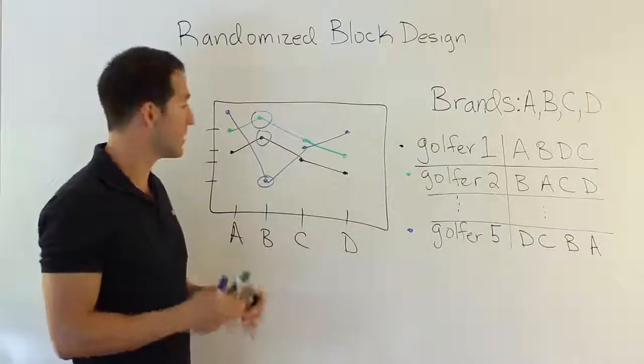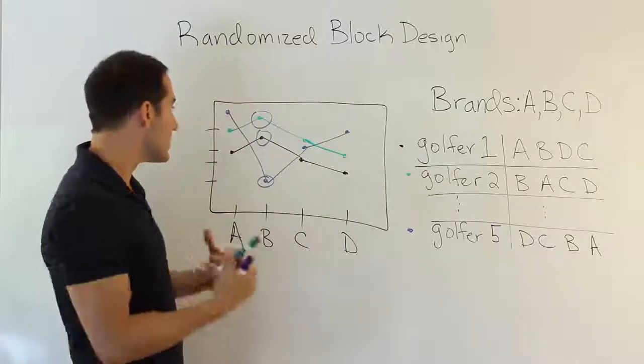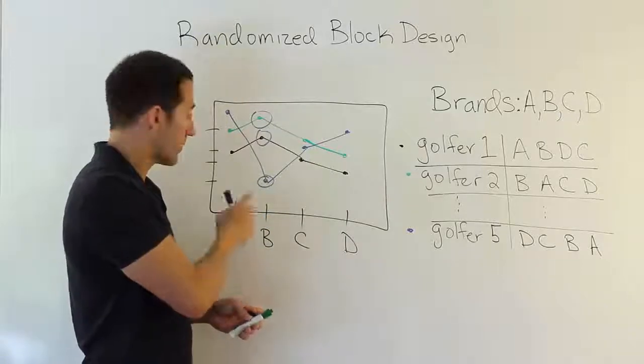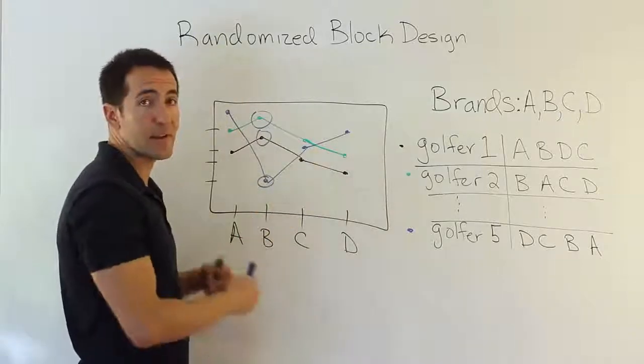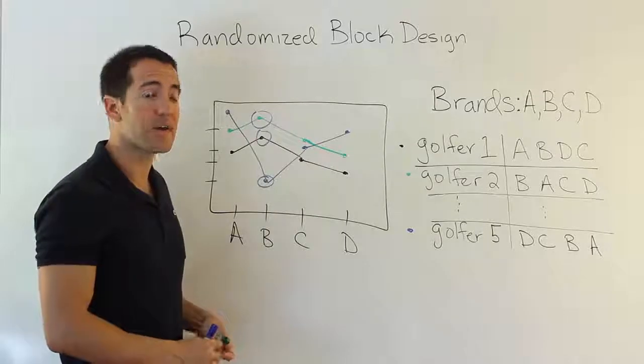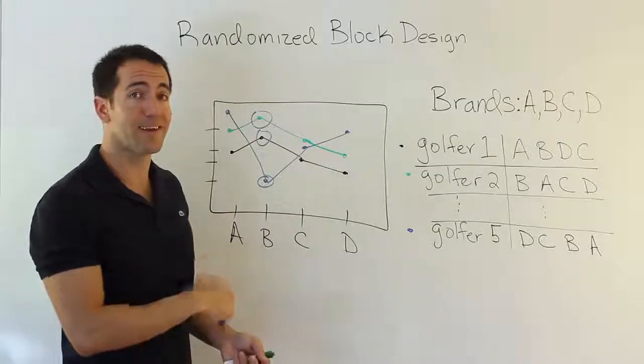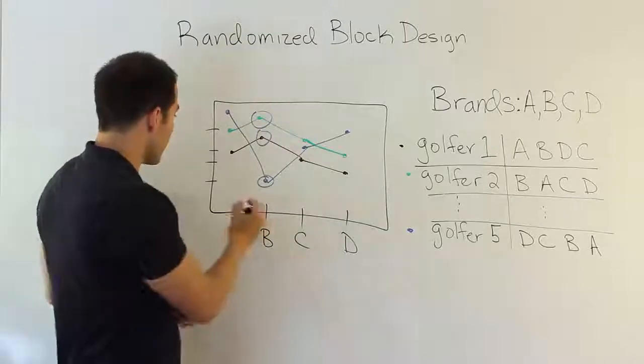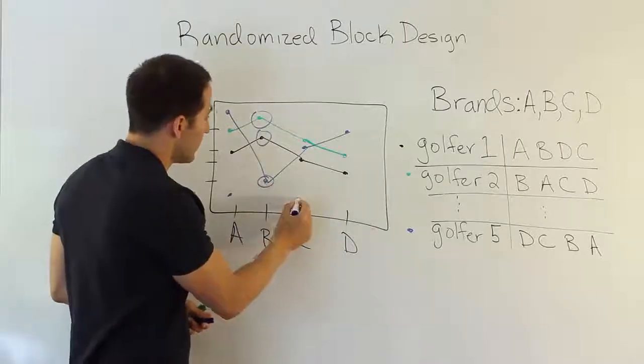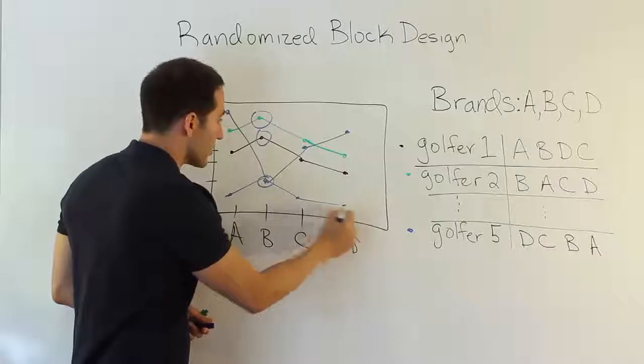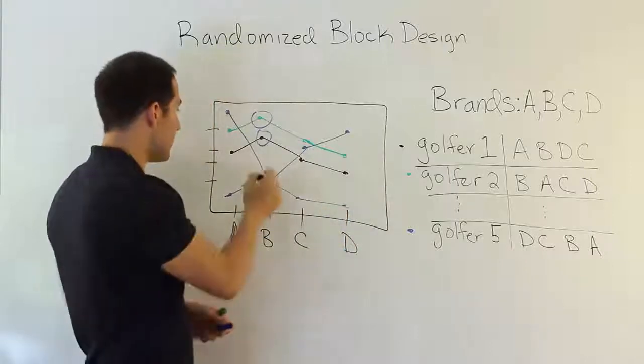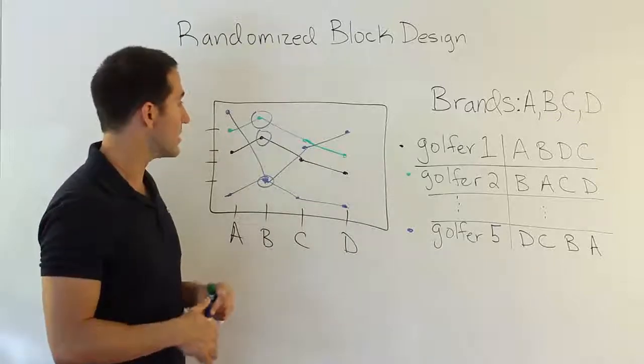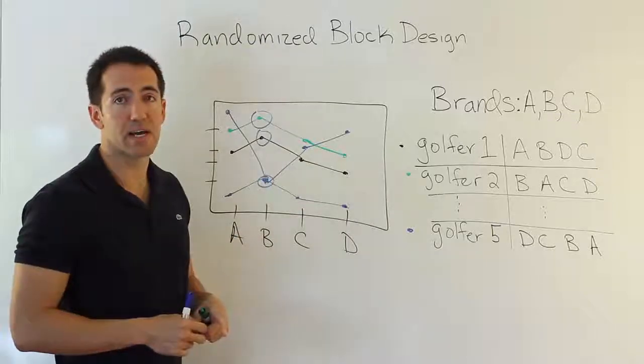That assumption is that there isn't an interaction effect. Essentially, in theory, if golf ball B is the best ball in the list, then it's the best for all golfers that we give it to. Every golfer that comes along and strikes B is going to hit it farthest. You may be a poor golfer. You may hit the balls way down here because you're not very good. But still, B is your best ball, D is your worst, so on and so forth. So that's kind of the assumption that we have in randomized block design.